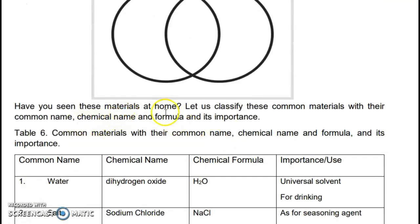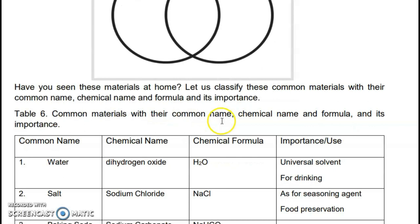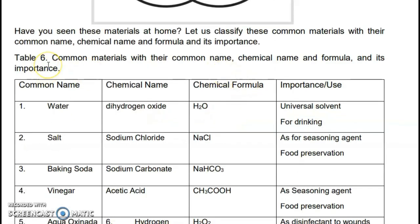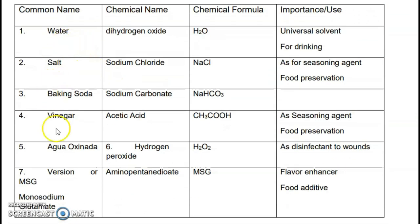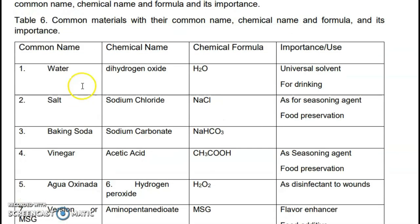Have you seen these materials at home? Let us classify these common materials with their common name, chemical name, formula, and importance. The table shows seven examples of common materials with their common names, chemical names, chemical formulas, and uses. Read through these seven examples carefully.